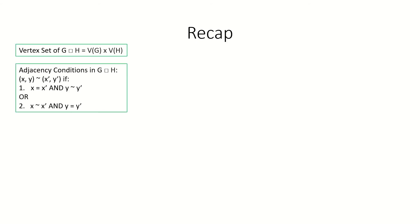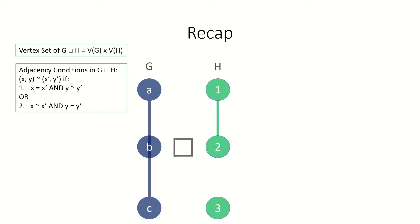To recap, the Cartesian product of two graphs is itself a graph whose vertex set is the Cartesian product of the vertex sets of the input graphs, and where two vertices are adjacent when either their left entries are the same and their right entries are adjacent, or their right entries are the same and their left entries are adjacent. As an example, here's the Cartesian product of these two graphs, g and h.